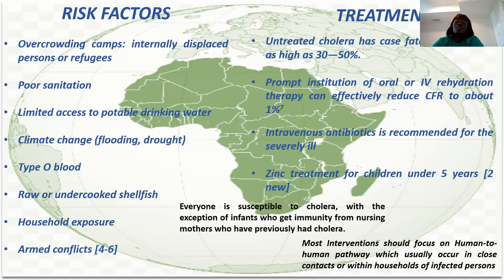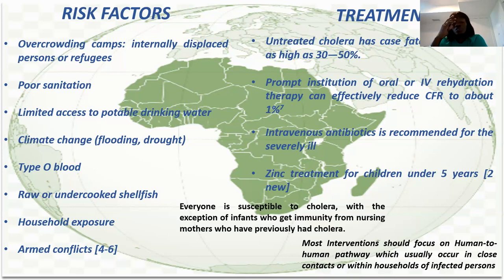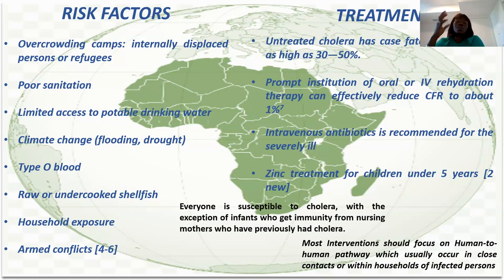Climate change, such as flooding, can carry the bacteria into the human environment. People with blood group O are at greater risk of contracting cholera than people of other blood types. Raw and cooked food, as well as household exposure, are also risk factors — if someone is infected in the house, everybody in that house is already exposed. Armed conflicts, which displace people, also put populations at risk of cholera, because if there is an outbreak where they are, it can spread to the whole population.